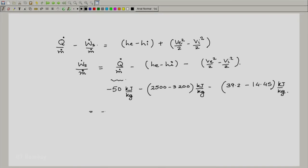So this is minus 50, negative and negative becomes positive plus 700, and we have minus 24.75, all have the same units kilojoules per kg, and we get this finally as 625.25 kilojoules per kg. This is W_s_dot by m_dot, the specific work output from the turbine.